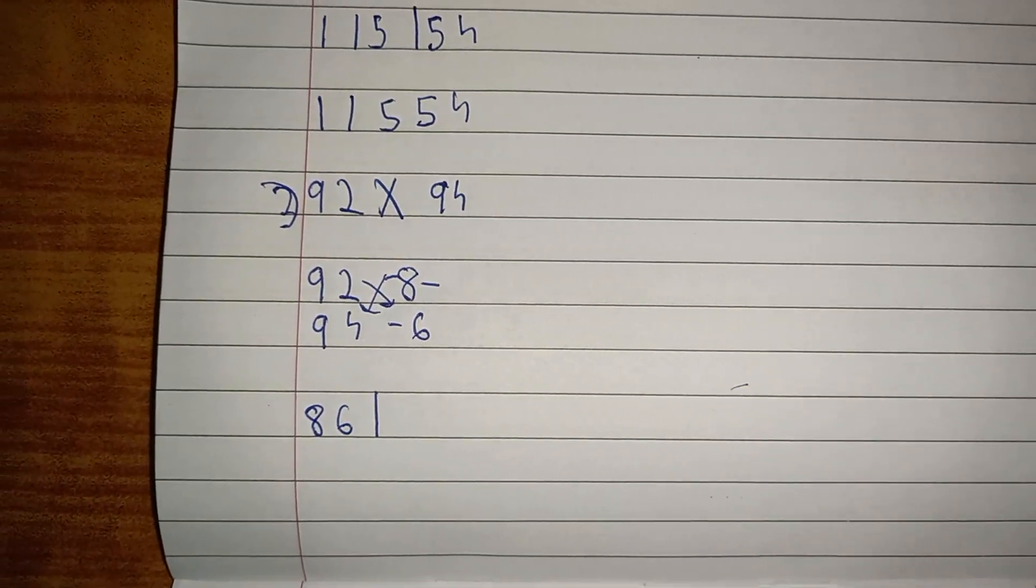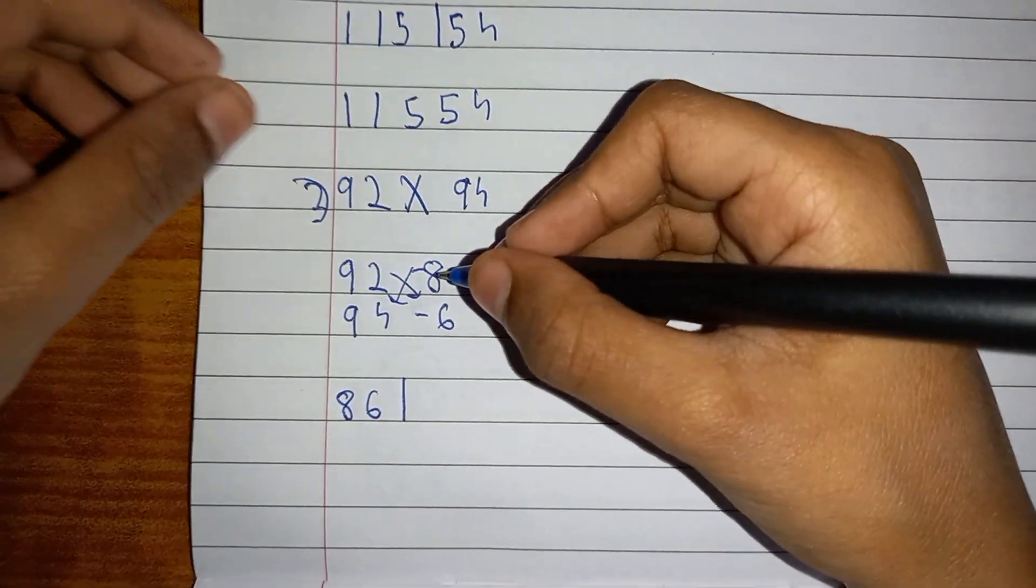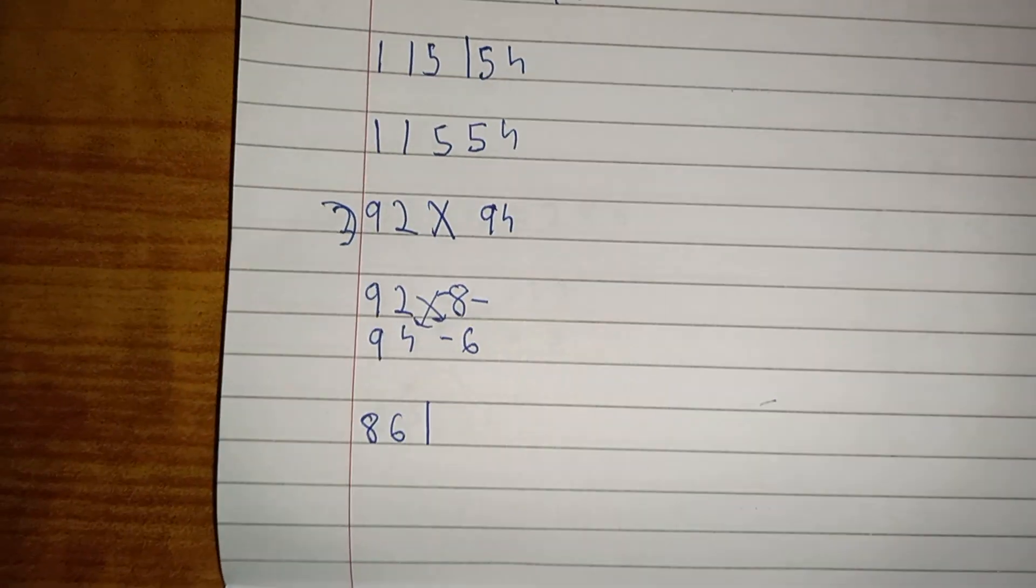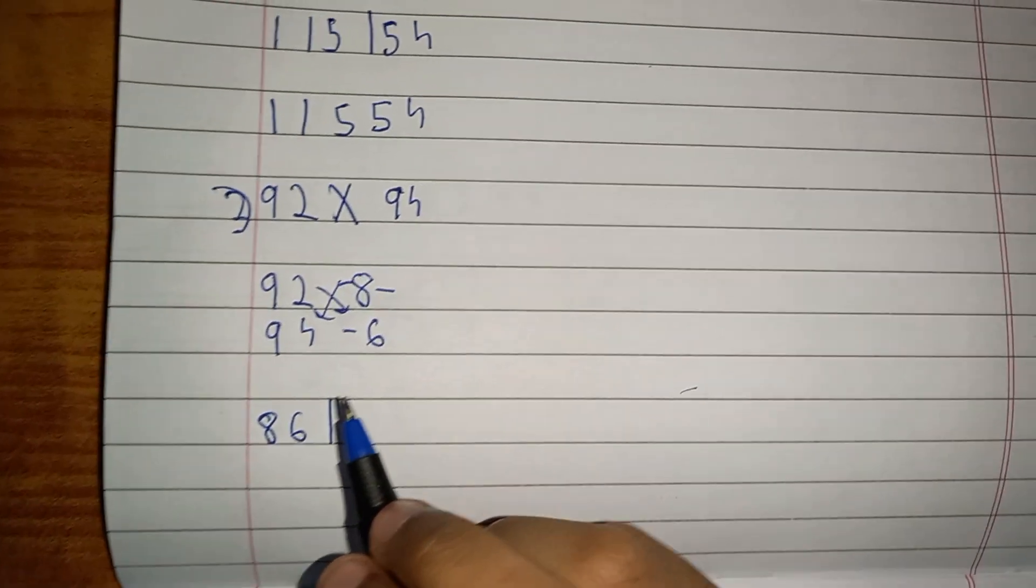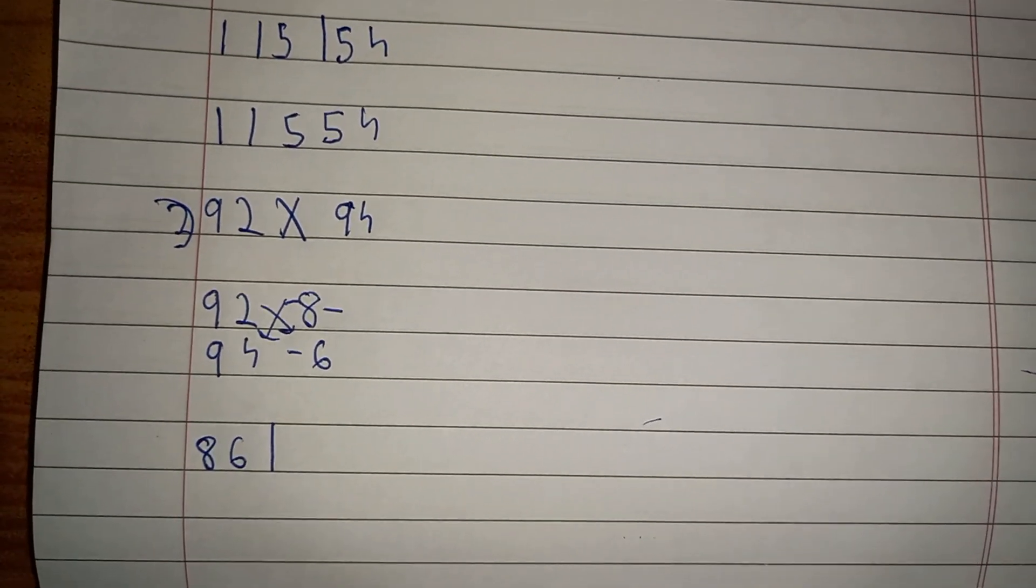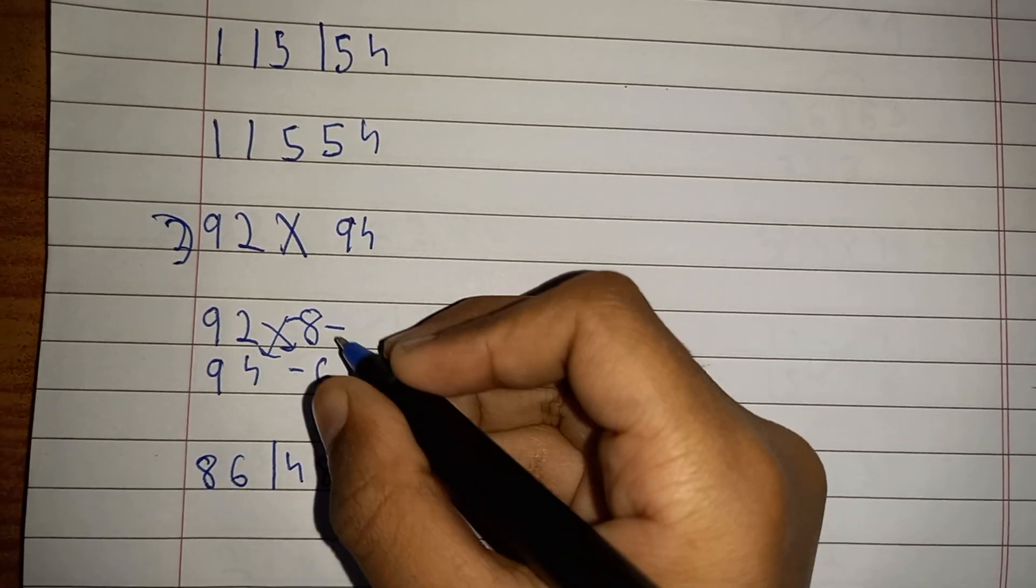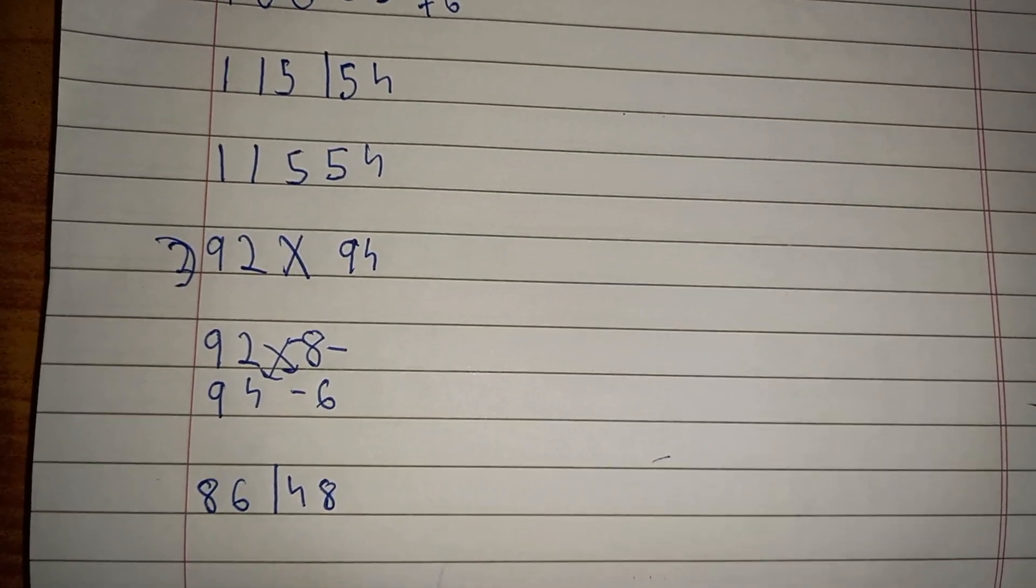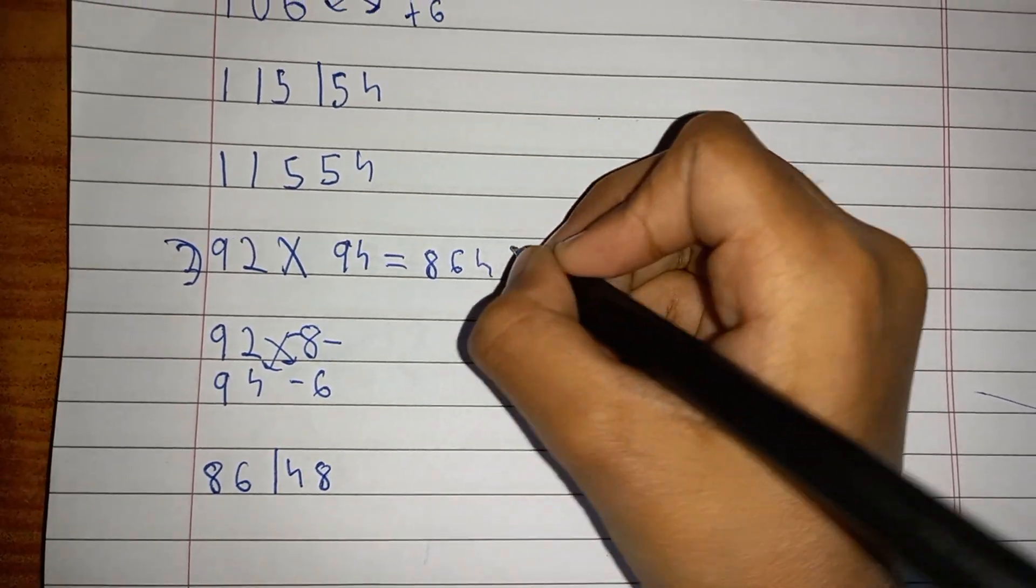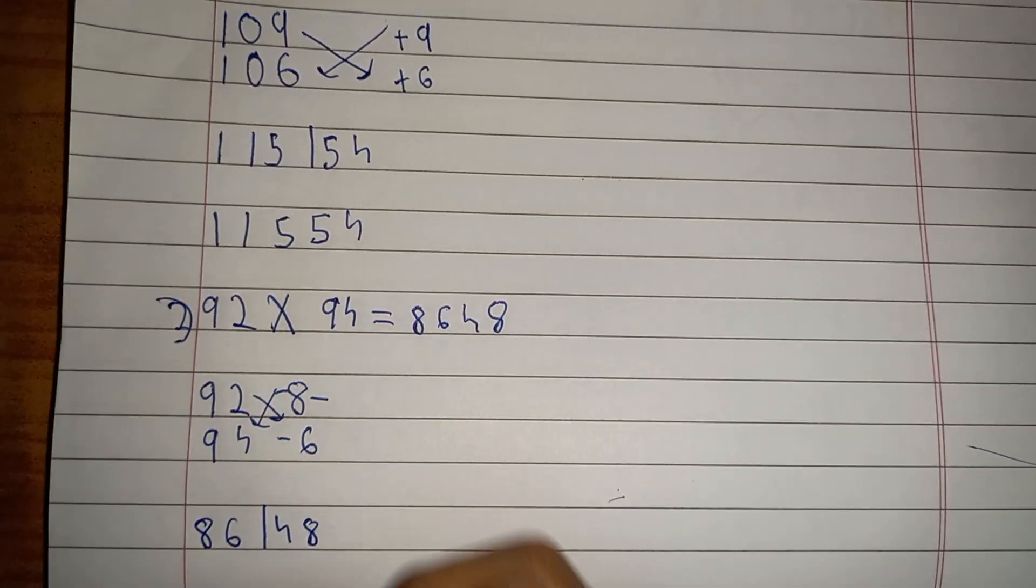Then you have to do minus 8 multiplied by minus 6. Which we have to do if minus minus, minus will become plus. So you have to write 48, because 8 times 6 is 48. Then the answer is 8648. So the answer is 8648. You can even check it in your calculator.